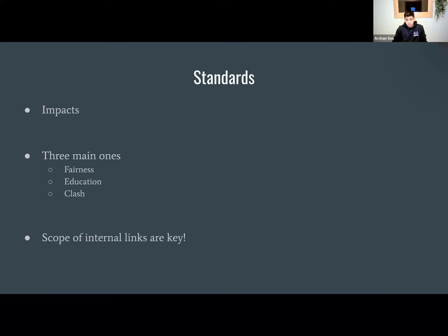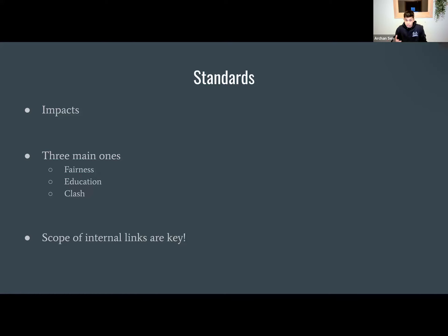However, the next part — standards — is the biggest thing in a theory debate. Standards are the impact. This is the reason that your interp is better than your opponent's interp. The three main ones that people read are fairness, education, and clash. A quick way to elevate your theory debating is to do impact calculus between these. For example, fairness outweighs education because if debate wasn't fair, it would turn into a lecture where we wouldn't gain anything unique. Similarly, clash outweighs education because it's a prereq to how we get education in the first place — debating about it is necessary in order to gain education. Doing this allows you to determine which standard is biggest in the round and which the judge should care about most.